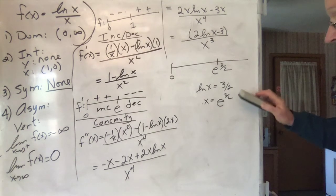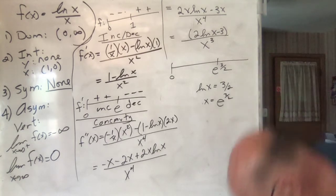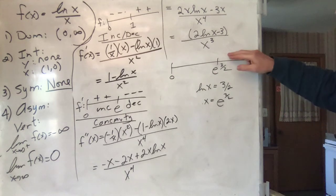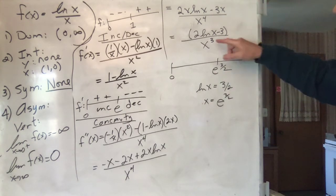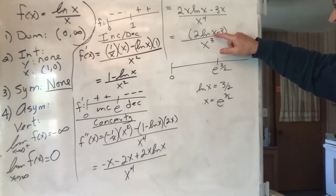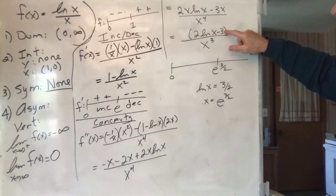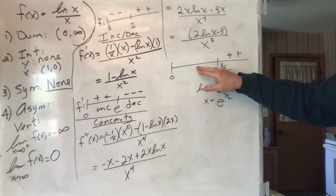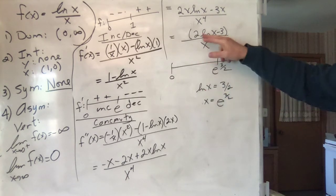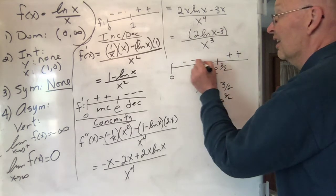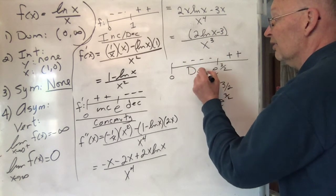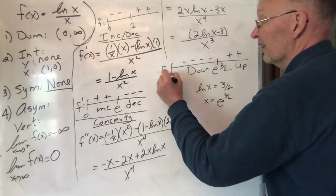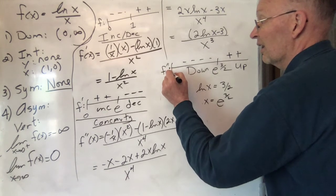Where is f''(x) zero? The endpoint of the domain is at x = 0. The numerator 2·ln(x) − 3 = 0 gives ln(x) = 3/2, so x = e^(3/2). For x > e^(3/2), ln(x) > 3/2 so 2·ln(x) − 3 > 0, making f'' > 0 — concave up. For 0 < x < e^(3/2), f'' < 0 — concave down. So we have an inflection point at x = e^(3/2). Now we have all the information we need to graph.